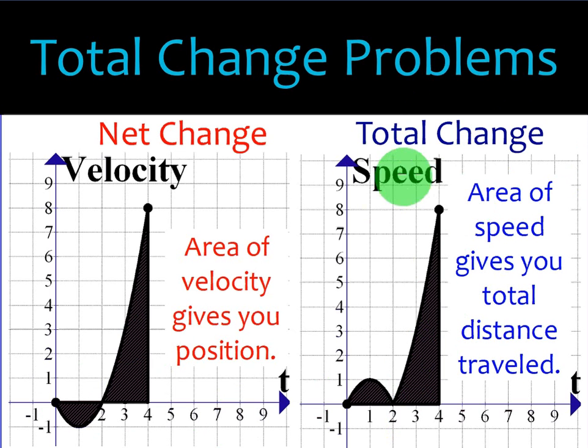And speed is found by taking the velocity, picking any area or any part of the curve that's below the t-axis and flipping it upwards and putting it above the t-axis. That will give you speed. So velocity can be negative, speed cannot, and therefore total change cannot be negative.